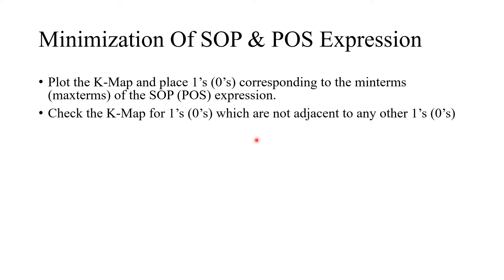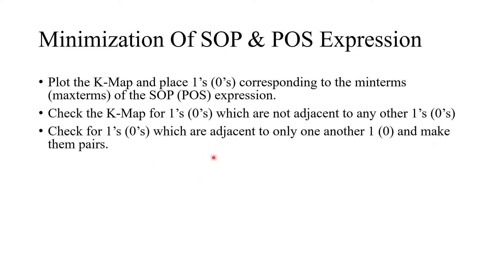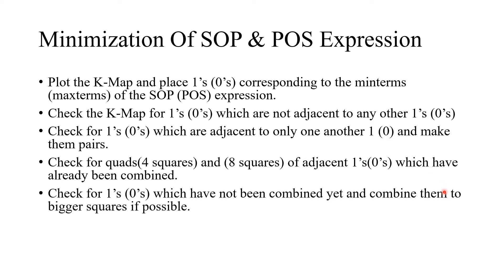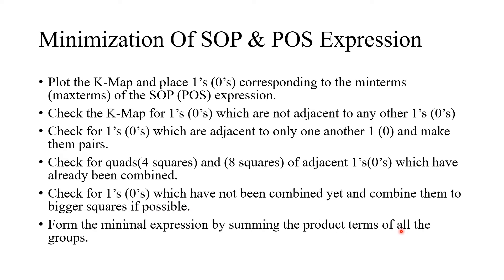The second step is to check the KMAP for ones or zeros which are not adjacent to any other ones or zeros. The third step is to check for ones or zeros adjacent to only one other and make them pairs. Then check for quads — that means four squares and eight squares of adjacent ones or zeros — and combine any remaining uncombined ones or zeros into bigger squares if possible. Finally, form the minimal expression by summing the product terms of all groups.